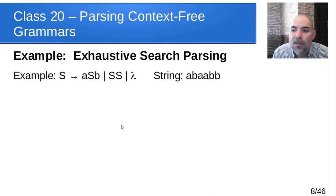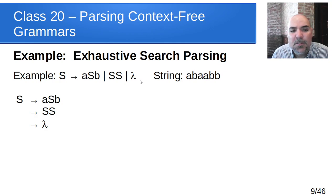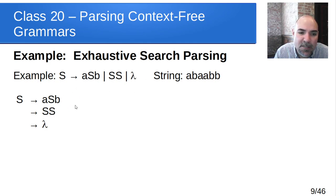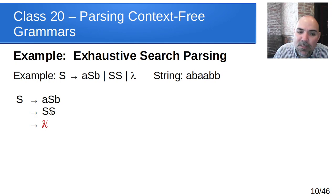Here's a simple example grammar with three productions for S, and the string 'abaabb' that we want to parse. We start with S and in exhaustive search parsing we branch all three ways: ASB, SS, and lambda. Right away, the lambda production is a dead end — lambda doesn't match our string, so we cross that off. The other two, ASB and SS, are still viable.